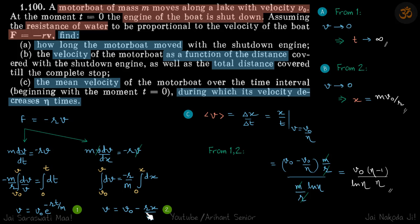Which means v0 is equal to rx by m, and that gives x equal to m v0 by r. So this is the distance traveled by the motorboat overall. Finally, mean velocity, so that is distance traveled by time.